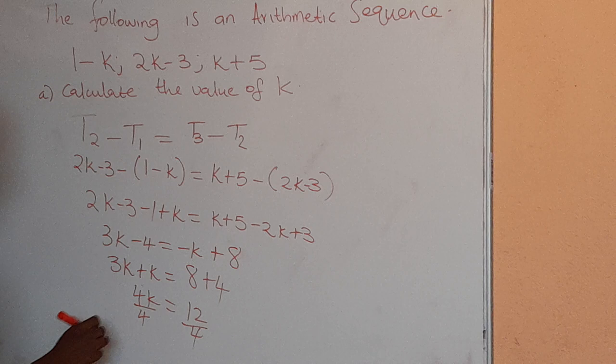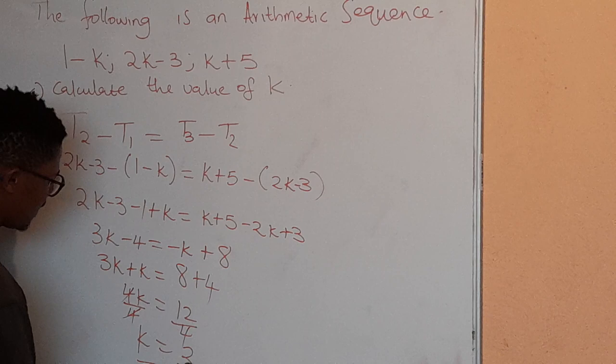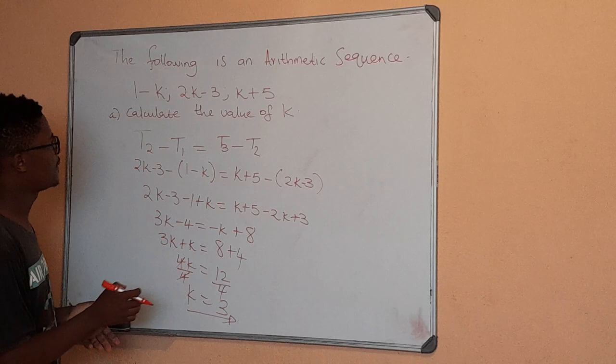So k will be equal to 12 divided by 4, which is 3, and this is our final answer. That's how we calculate the value of k. The important formula to use is the common difference formula. Thank you.